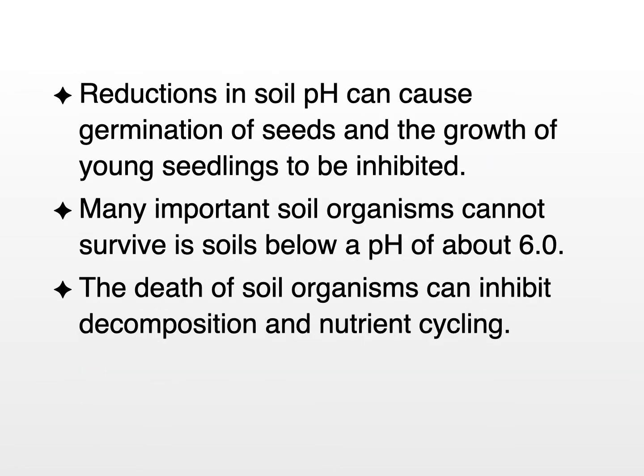Reductions in pH were also shown to affect the germination of seeds and inhibit the growth of young seedlings. Many soil organisms important in decomposition processes don't survive well if the pH of the soil goes below 6.0. If these soil organisms die, decomposition and nutrient cycling is reduced.